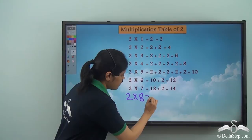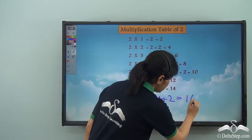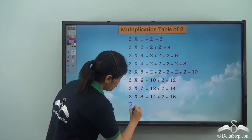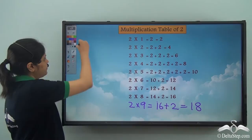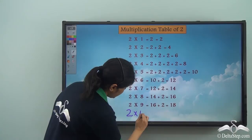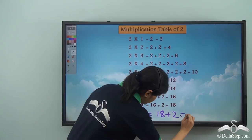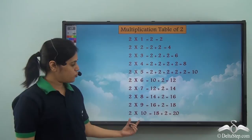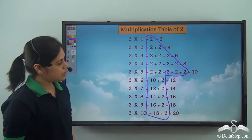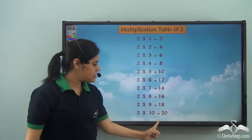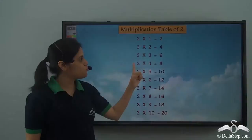Two into eight is fourteen plus two, which is sixteen. Two into nine is sixteen plus two, which is eighteen. And two into ten is eighteen plus two, which is twenty. So two into ten is twenty. So I can simply have the last column: two into one is two, two into two is four, two into three is six, and so on up to two into ten.